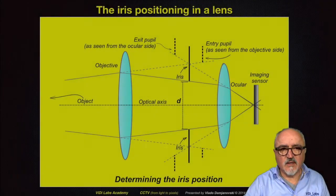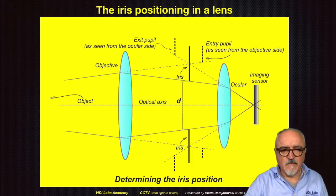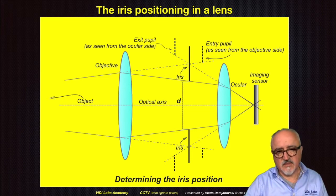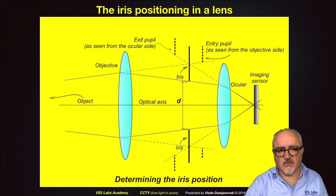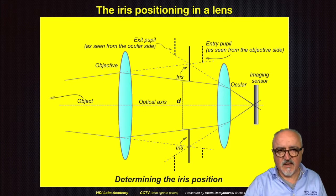One thing I want to explain is to do with iris positioning in a lens. Many people think they can measure the diameter of the iris by measuring the front end of a lens — the so-called objective. That is not true and not correct, because the positioning of the iris in a lens is an exact optical science which defines the precise plane where the iris is set. The actual diameter of the iris cannot be determined by seeing and measuring the front end or the back end of the lens, because the iris sits somewhere inside the lens and is usually much smaller than the front element.